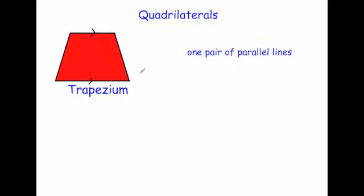There are lots of different types of trapezium — you can have a right-angle trapezium, or a regular trapezium which does have a line of symmetry. The main property of a trapezium is that it has one pair of parallel lines, so the top line is parallel to the bottom line.